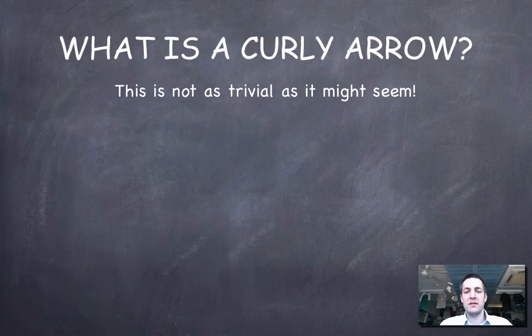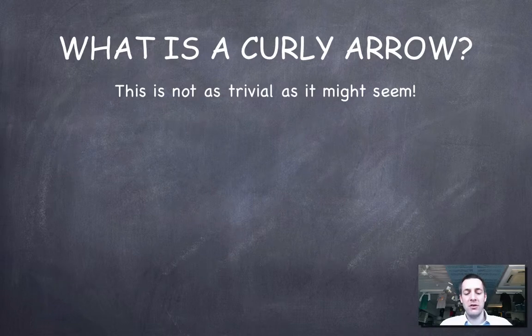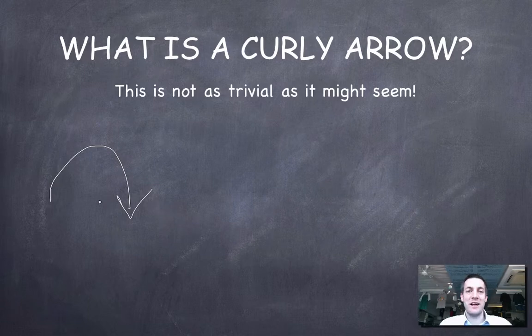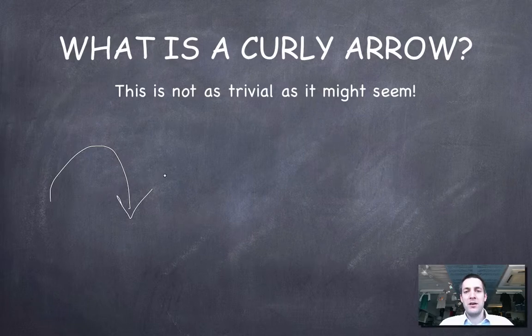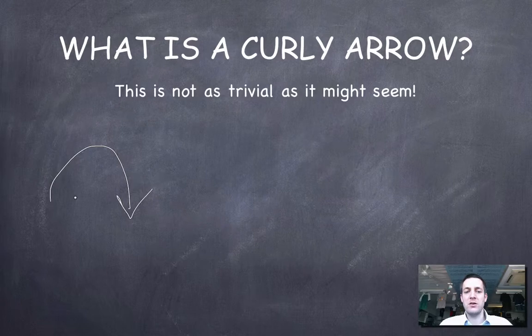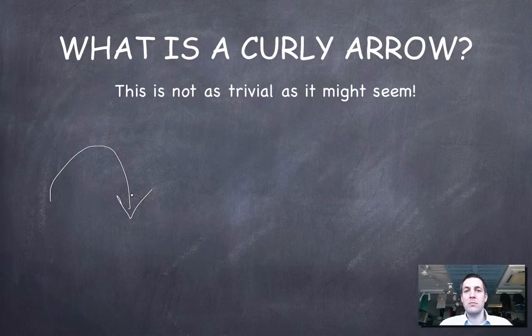Having defined that let's now define the term curly arrow. Now I'm going to draw one for you and that's what it looks like. But if you're asked in a test or exam which you might be what is a curly arrow because this is official terminology in chemistry. You have to be able to explain what it shows. So it's not just about being able to draw one. You have to be able to explain that a curly arrow shows the movement of a pair of electrons.